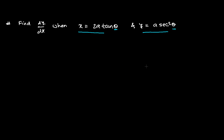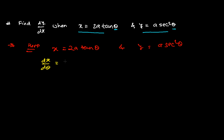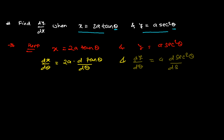Let's solve step by step. We have x = 2a·tan(θ) and y = a·sec²(θ). Differentiating both sides with respect to θ: dx/dθ equals 2a times the derivative of tan(θ), since 2a is constant. For dy/dθ, we take a outside and differentiate sec²(θ) — since it is sec(θ) squared, we first differentiate with respect to the base, then differentiate the base sec(θ) with respect to θ.